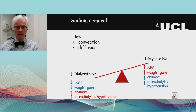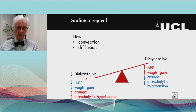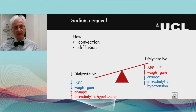Historically, sodium concentration in hemodialysis solutions was very low — often below 130, and 132 was an average. Reports from that era suggested that a low dialysate sodium lowered systolic blood pressure and reduced weight gains between sessions, but patients suffered more cramps and hypotensive episodes. Conversely, higher dialysate sodium tended to raise systolic blood pressure and weight gains, but produced fewer cramps and less intradialytic hypotension.